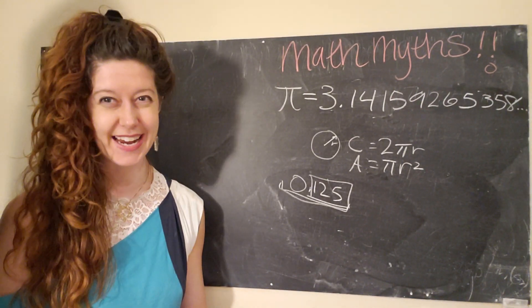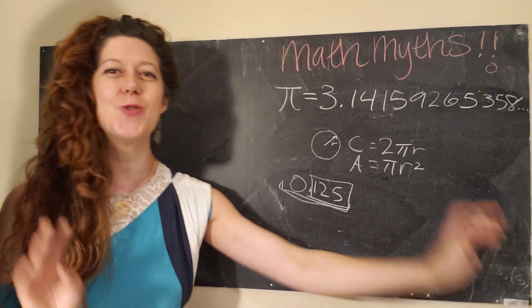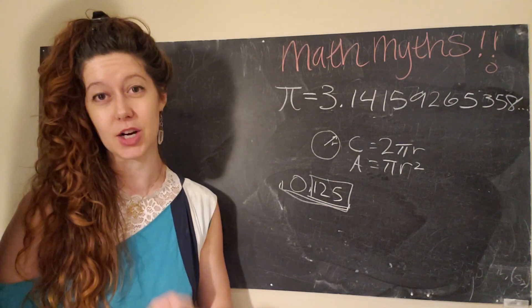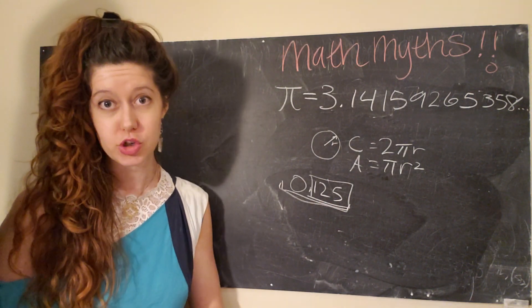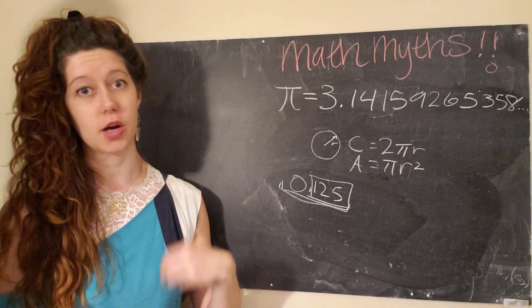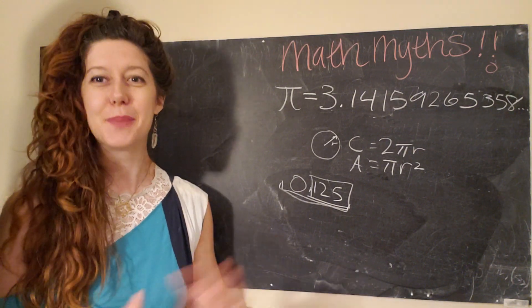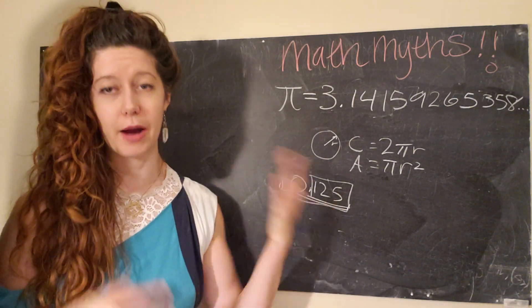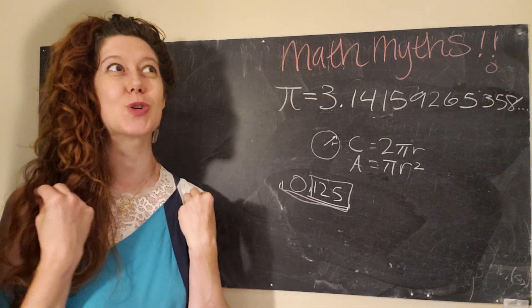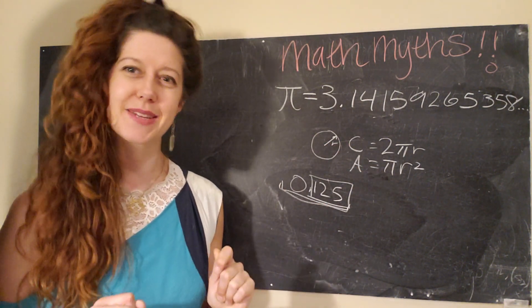So all of that is to say, this is a really interesting myth, but it is false. Math myth busted. Pi does not necessarily contain all possible combinations of mathematical sequences. And it certainly does not contain any other irrational number. So there we go. Please let me know if you have any questions about pi, about irrational numbers, or about this math myth and keep sending me your math myths. These are super fascinating. So yes, thanks for watching and we'll see you next time, friends. Bye.